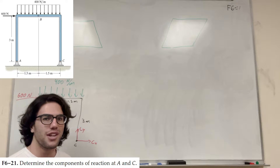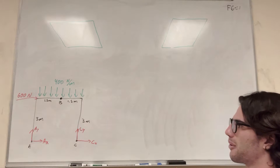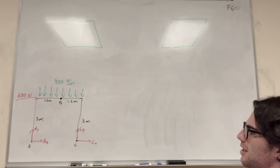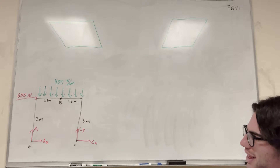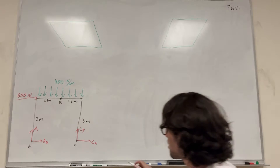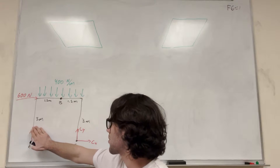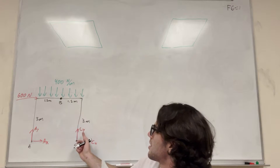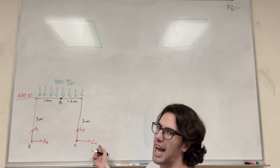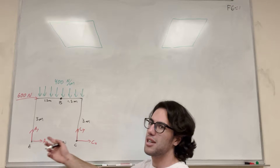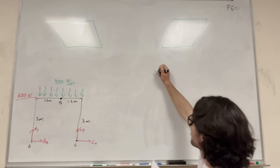So how are we going to do this? Before you get overwhelmed, let's just do everything that we can. We can maybe take a moment, and the moment might be able to help us find things out. So let's start by taking a moment at A. If we take a moment at A, then A of X and A of Y cancel out. C of Y is going to be in the equation, but C of X is not, because it's acting on the x-axis where A is. So if we take the sum of moments at A, we can find C of Y.